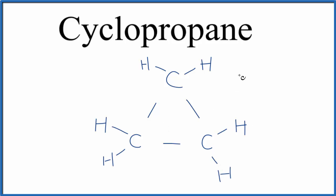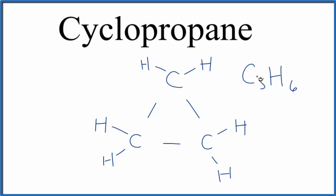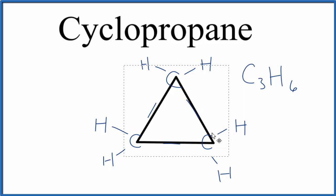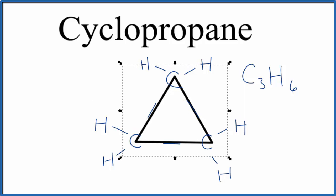So if we want to write the molecular formula, we have one, two, three carbons, and we have one, two, three, four, five, six of those hydrogen atoms — that's the molecular formula. Sometimes you'll see it just written like this with just a triangle, but we know that carbons are at each point, and each carbon has two hydrogens.